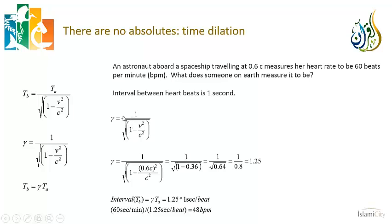So let's calculate gamma: 1 over the square root of 1 minus v squared over c squared. Well, v is 0.6c. So if we just do the math, it's 1 over the square root of 1 minus (0.6c)² over c² — that's 1 over 1 minus 0.36, take the square root, which is 1 over the square root of 0.64, which is 1 over 0.8, which is 1.25. So the guy on Earth measures the interval between heartbeats to be 1.25 seconds. And so if we say 60 seconds per minute divided by 1.25 seconds per beat, we get that someone on Earth would measure your heart rate to be 48 beats per minute.